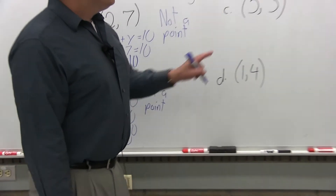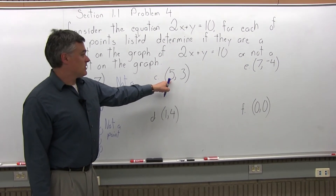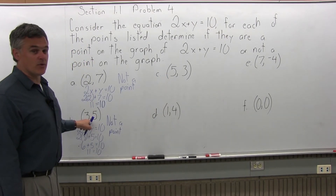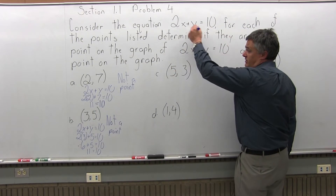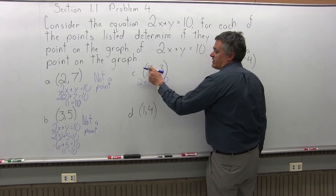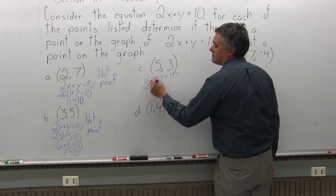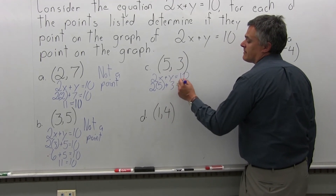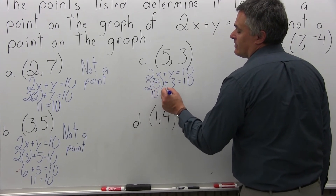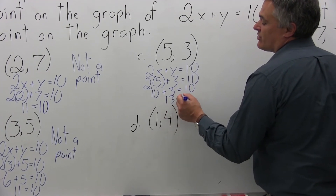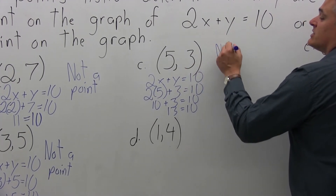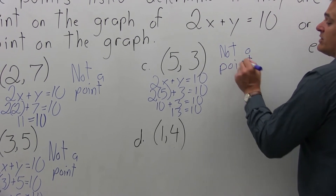Part C: determine if the point (5, 3) is a point on the graph of 2x plus y equals 10. These are the same numbers as Part B but in the opposite order — the x-coordinate and y-coordinate have been switched. Starting with 2x plus y equals 10 and putting in 5 for x: 2 times 5 plus 3. Two times 5 is 10, plus 3 more gives 13 equals 10 — not true. So (5, 3) is not a point on the graph.